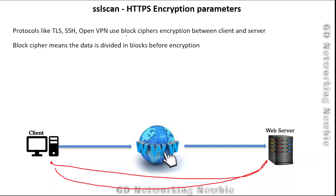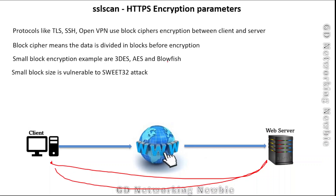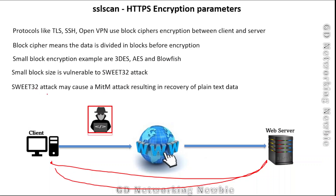In block cipher encryption, the data to be encrypted is divided into blocks. If the block size is small, it can be vulnerable to different attacks. Examples that use small block sizes include Triple DES and Blowfish. A small block size is vulnerable to attacks like the SWEET32 attack, which can enable a man-in-the-middle attack, allowing plain text data exchanged between client and server to be recovered.